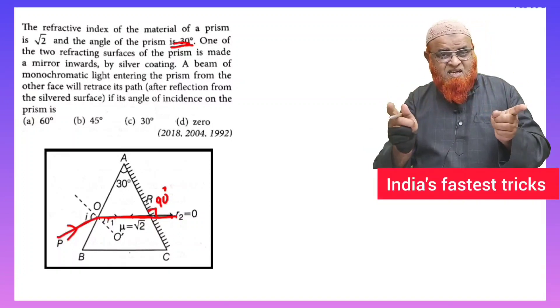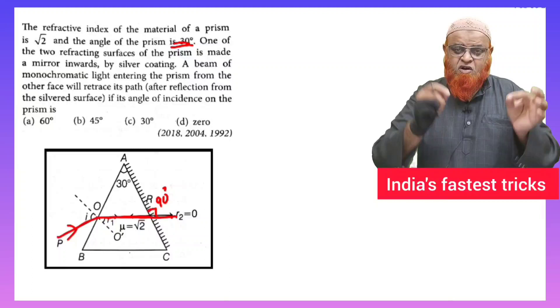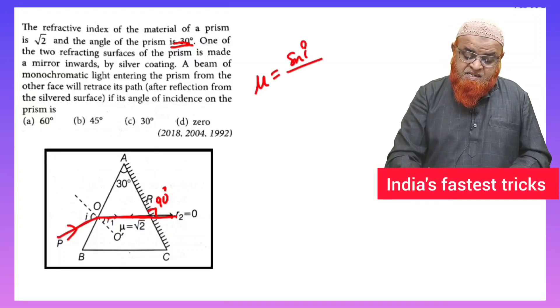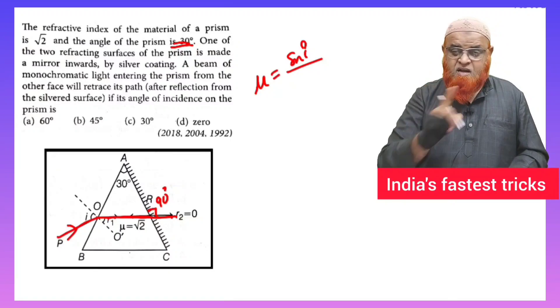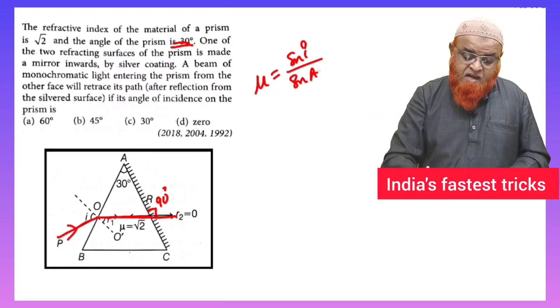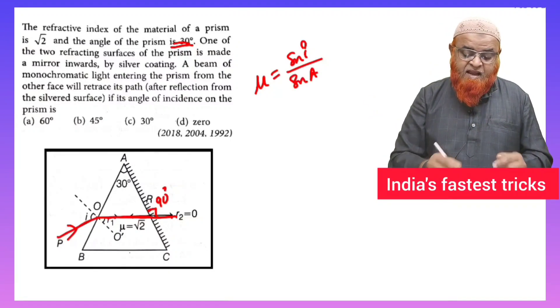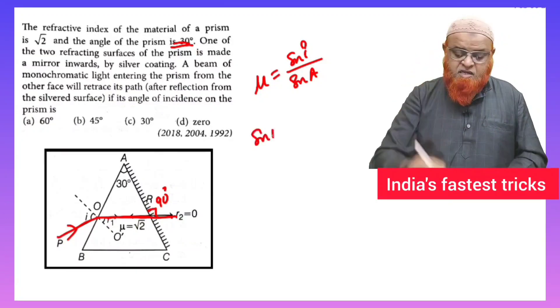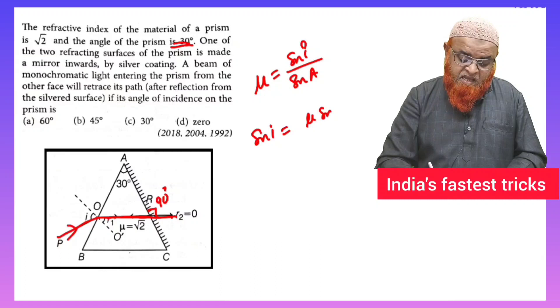That is μ is equal to sin i by sin r. You will write, no, don't write sin r. Directly you can take sin A, which is the angle of the prism. Okay, so that's it, finish in a single step. We'll get an answer: sin i is equal to μ times sin A.